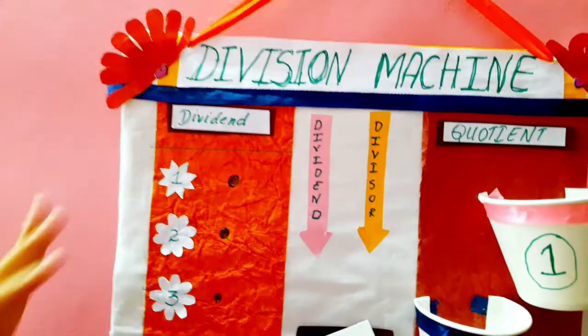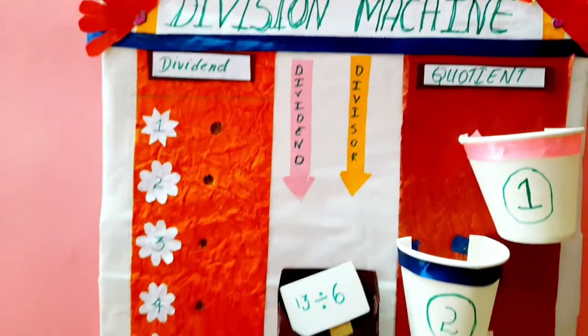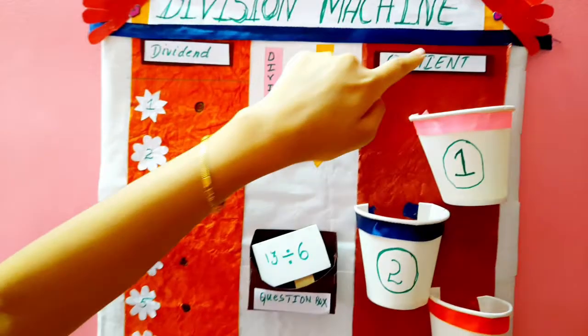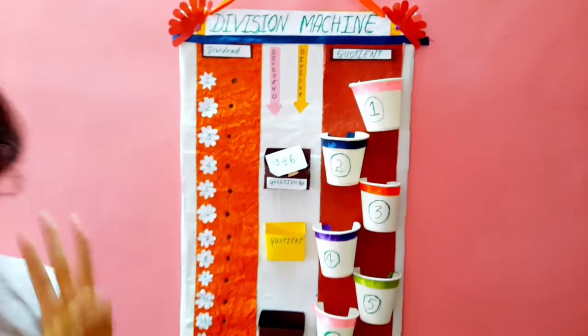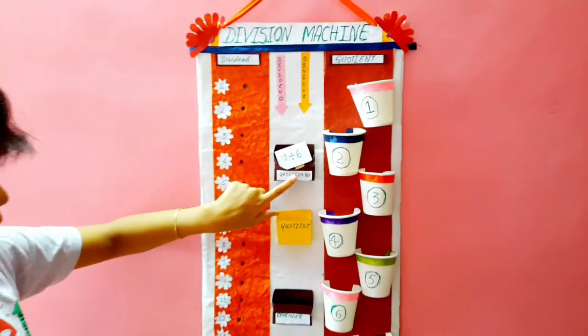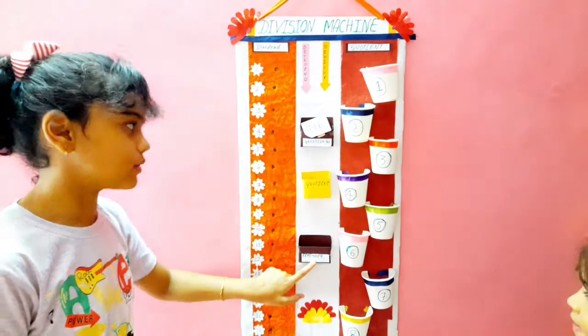So, let me explain you all the parts. This is dividend row. This is quotient row. And in the middle row, we have three boxes: question box, quotient box, and the reminder box.